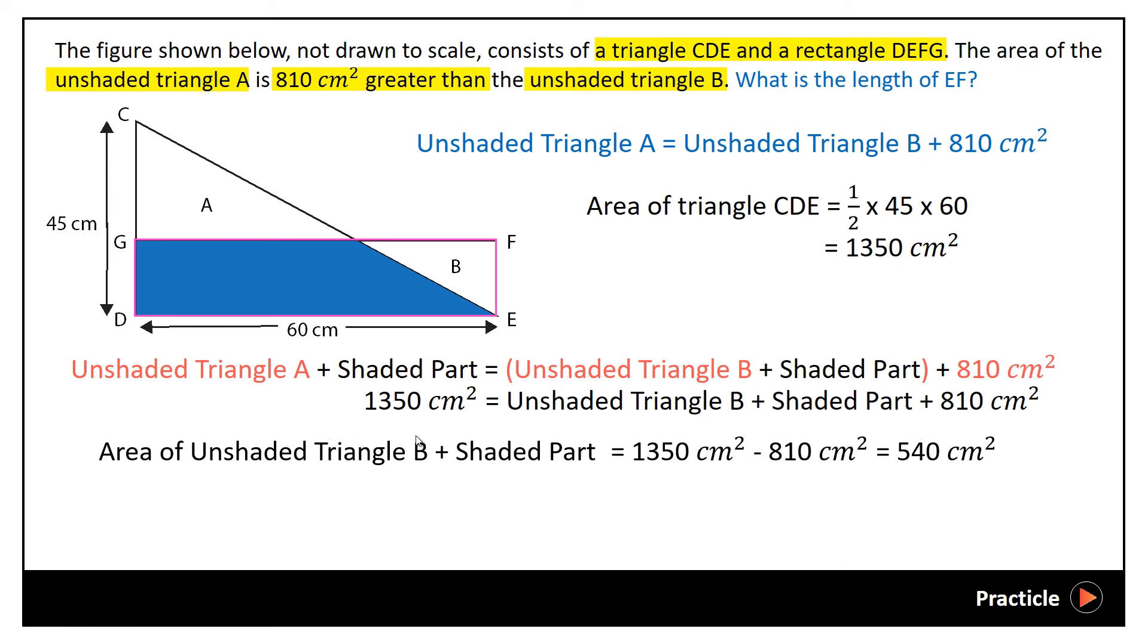So, what's so special about this portion over here? Do you guys realize that the area of the unshaded triangle B plus the shaded part is actually the area of rectangle DEFG?